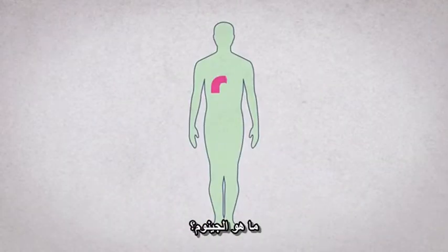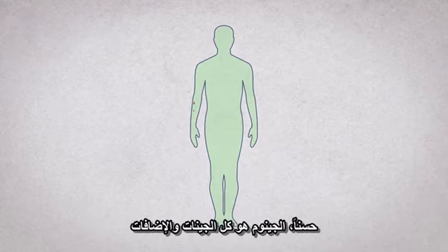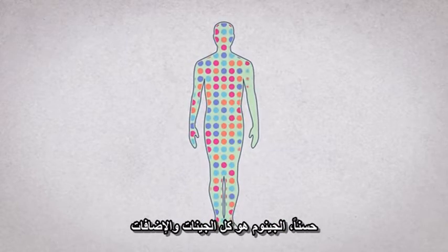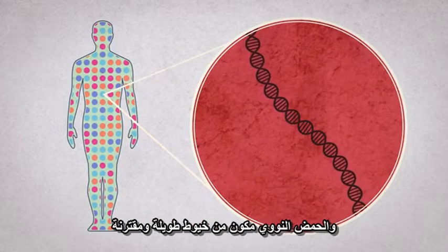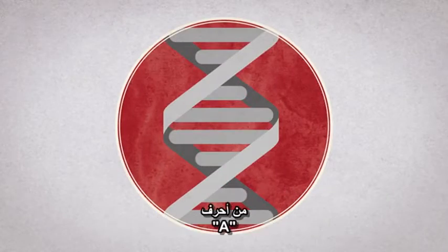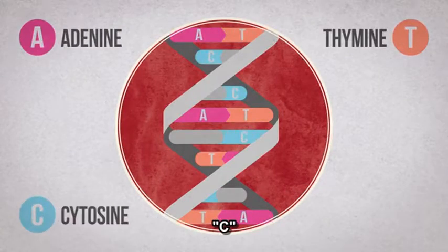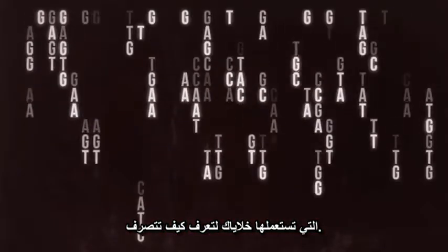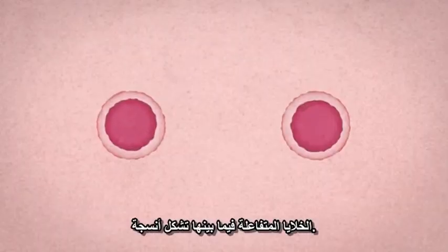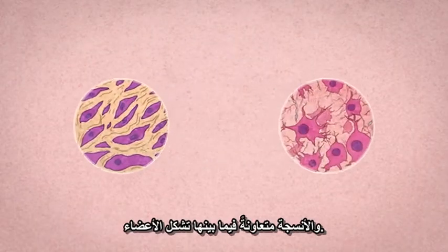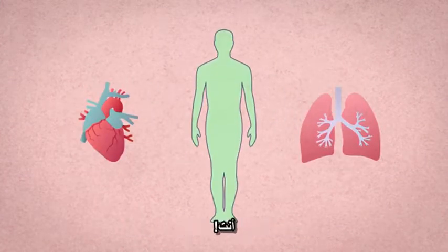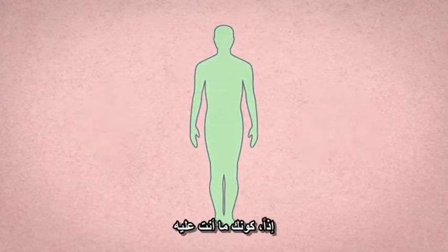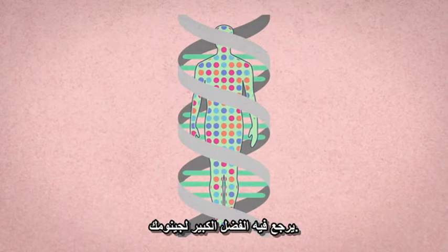Let's back up a bit. What is a genome? Well, a genome is all the genes, plus some extra, that make up an organism. Genes are made up of DNA, and DNA is made up of long paired strands of A's, T's, C's, and G's. Your genome is the code that your cells use to know how to behave. Cells interacting together make tissues. Tissues cooperating with each other make organs. Organs cooperating with each other make an organism. You. So, you are who you are in large part because of your genome.